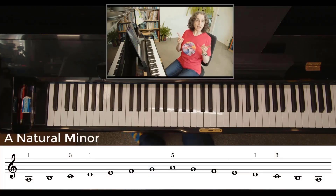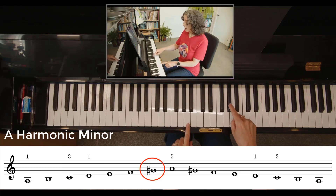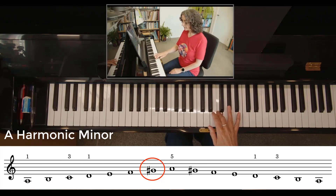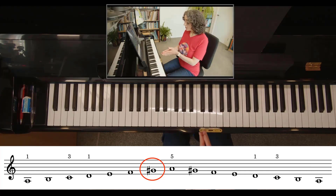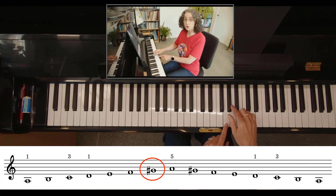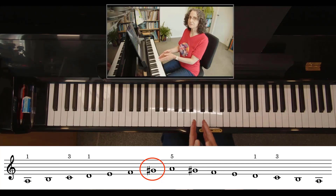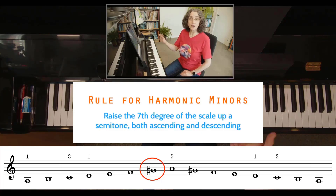If we look at our A natural minor, the seventh note is G. But for the harmonic minor, we're not going to play G — it gets raised a semitone up to G sharp. Let's have a listen to A harmonic minor. You can see on the scale that the raised seventh note has a sharp added in front of the note, so the G becomes G sharp. That G sharp isn't part of the key signature — you won't see it in the key signature. The rule for harmonic minor: you raise the seventh degree of the scale up a semitone on both the way up and the way down.